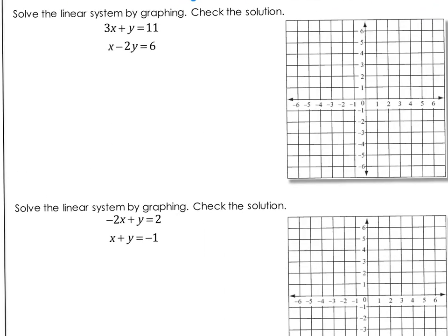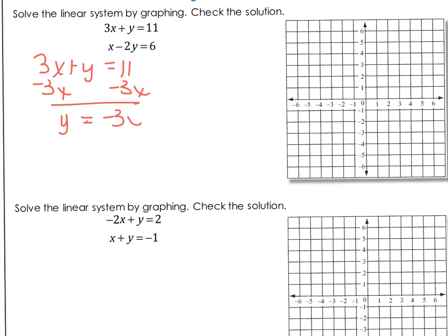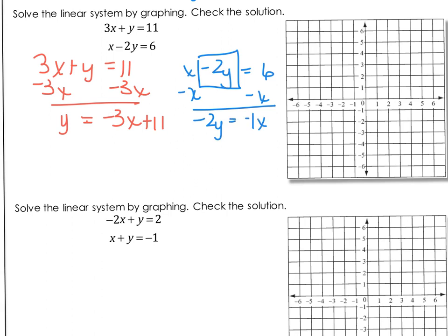Let's go on to the next example using the same procedures. Step 1: write each equation in slope-intercept form. My first equation, 3X plus Y equals 11 — subtract 3X on both sides — so Y equals negative 3X plus 11. My second, X minus 2Y equals 6 — subtract X. Watch your sign here; I'm left with negative 2Y equals negative 1X plus 6. Divide by negative 2 — negative over negative is positive — giving Y equals 1/2 X minus 3.